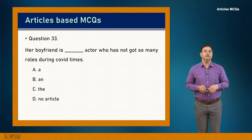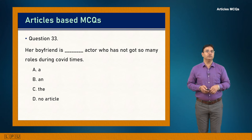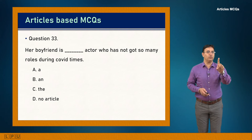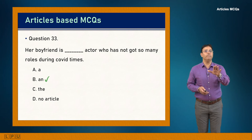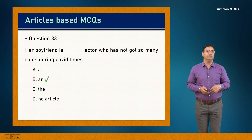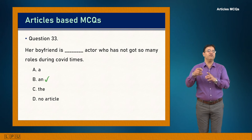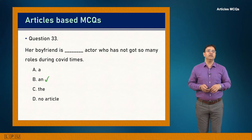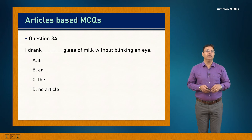Question 33: Her boyfriend is dash actor who has not got so many roles during COVID times. We are giving a trait or attribute, not making the person definite. 'An actor' — starts with vowel sound. Answer is B: 'Her boyfriend is an actor who has not got so many roles during COVID times.'